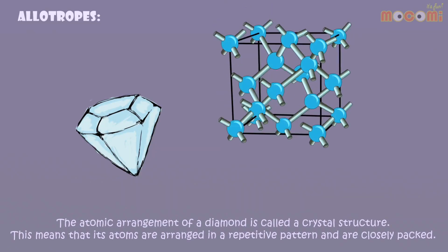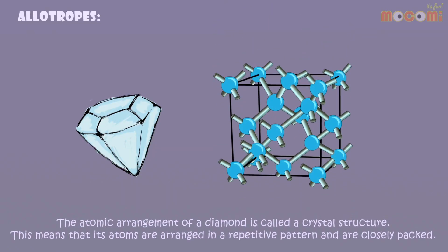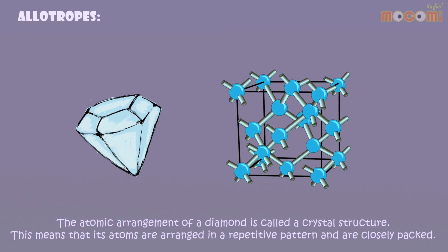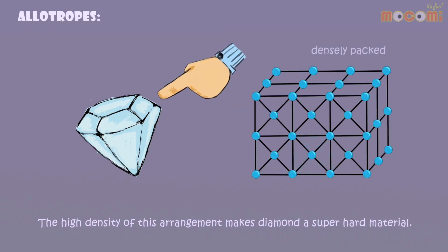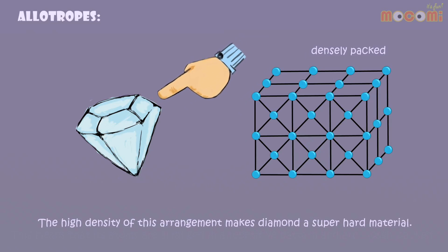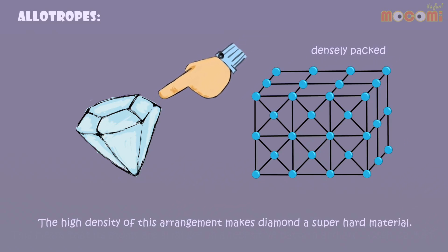The atomic arrangement of a diamond is called a crystal structure. This means that its atoms are arranged in a repetitive pattern and are closely packed. The high density of this arrangement makes diamond a super hard material.